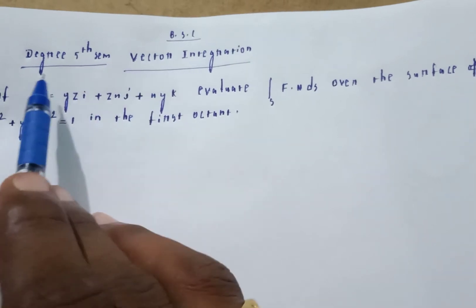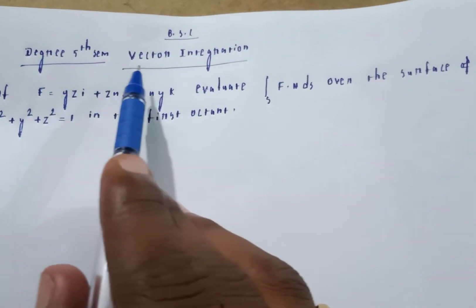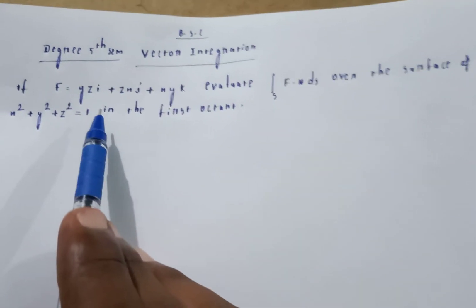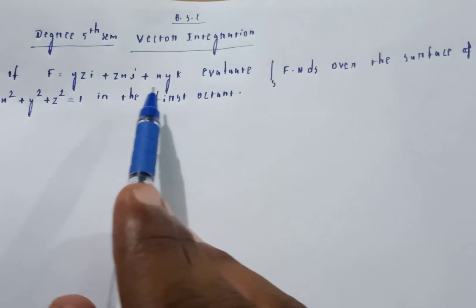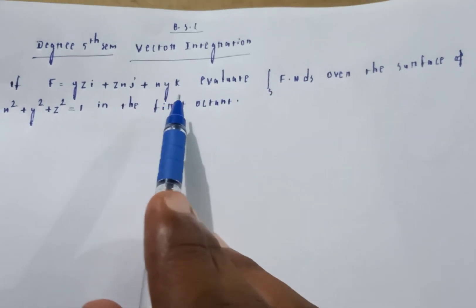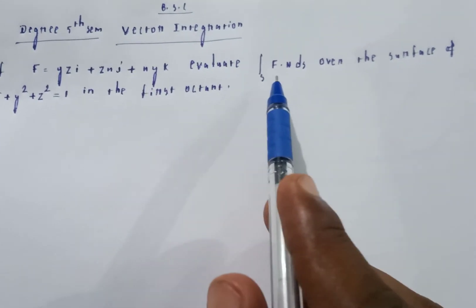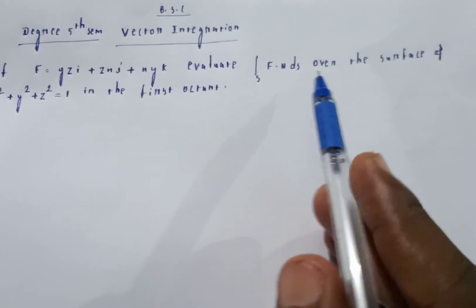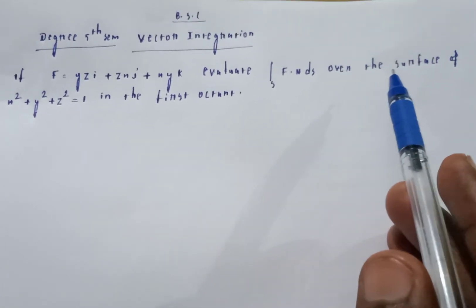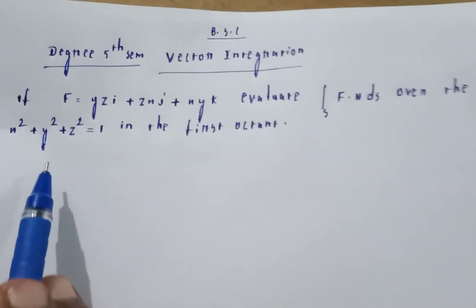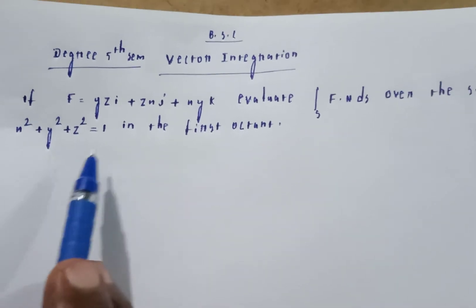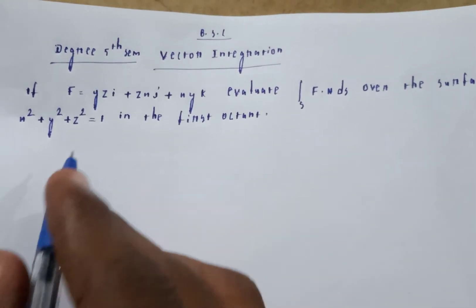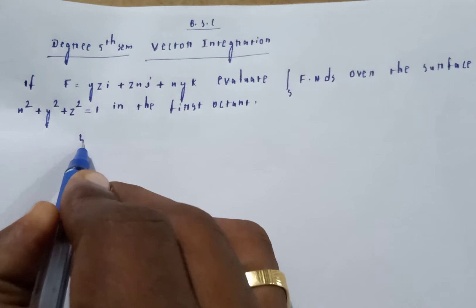Welcome to my channel. BSE degree fifth sem vector integration. If f is equal to yzi plus zxj plus xyk, evaluate the integral of f dot n ds over the surface of x square plus y square plus z square equal to 1 in the first octant.